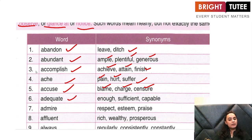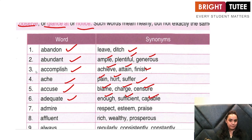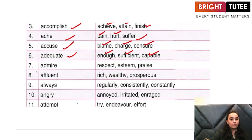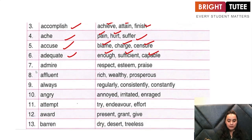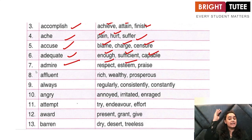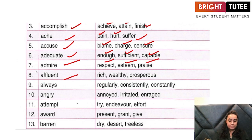'Adequate' — adequate means just enough quantity, as much as you need. Adequate is enough, sufficient, or capable. The next one is 'admire' — what do we mean by admire? Admire means to respect something or to praise something, to keep something in high esteem. 'Affluent' — somebody who is very rich, very wealthy or prosperous.